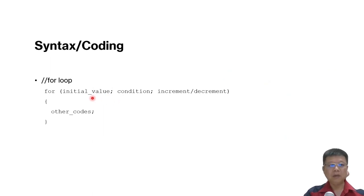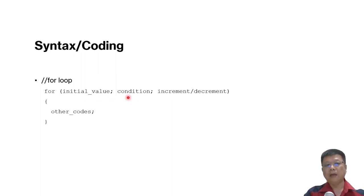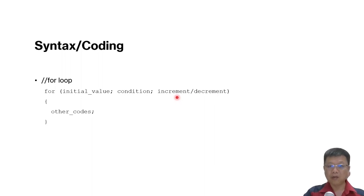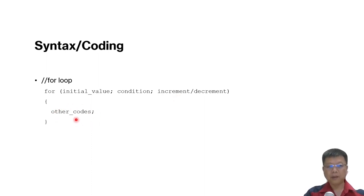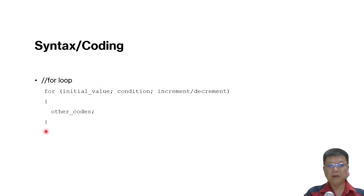The syntax is very simple. We start with 'for', and in the parenthesis we have the initial value — meaning the value to start the for loop — then conditions, meaning when we want to stop, and the third part is the increment or decrement. Either the value will be increased or decreased after every loop. The other part of the code goes here. For good practice, I always suggest you use curly brackets.